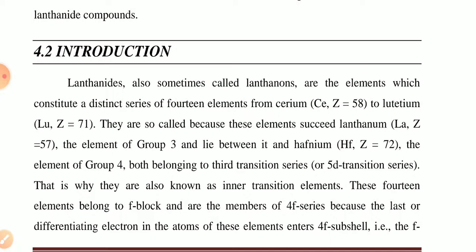The lanthanides are also called as lanthanons, and these elements contain 14 elements starting from cerium to lutetium, from atomic number 58 to 71. These elements succeed from lanthanum, which has atomic number 57.